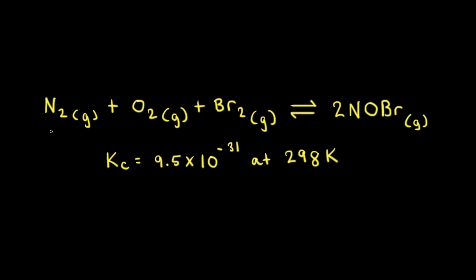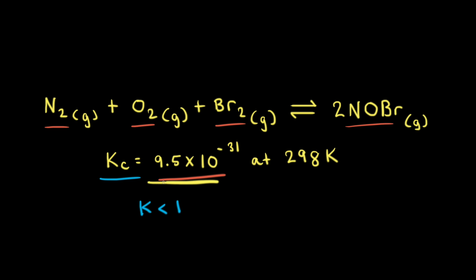Let's look at the reaction of nitrogen gas plus oxygen gas plus bromine gas to form NOBr. At 298 Kelvin, the equilibrium constant for this reaction is 9.5 times 10 to the negative 31st. Since K is less than 1, we know at equilibrium there are more reactants than products. With an extremely small K value like 9.5 times 10 to the negative 31st, this reaction barely proceeds at all — at equilibrium you'll have almost all nitrogen, oxygen, and bromine, and very little NOBr.